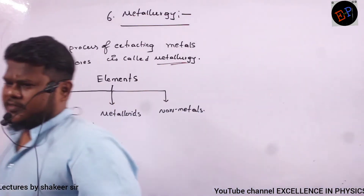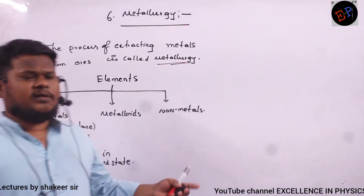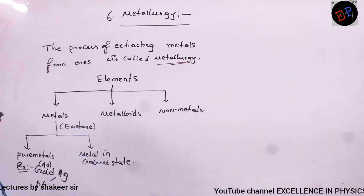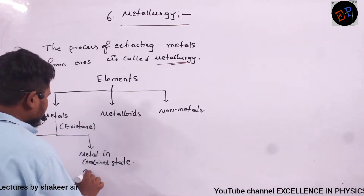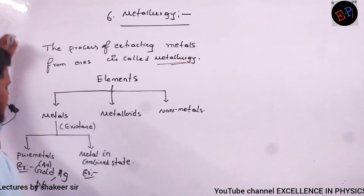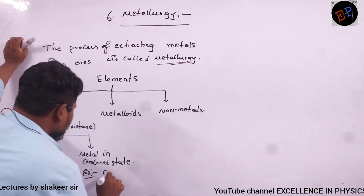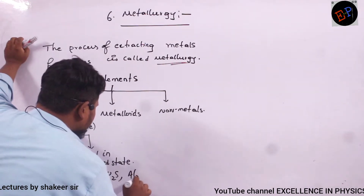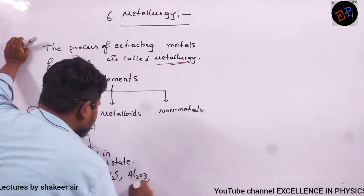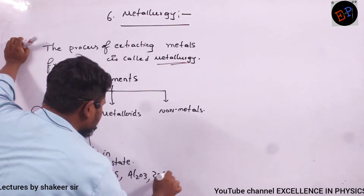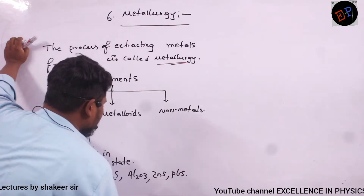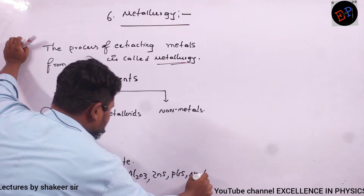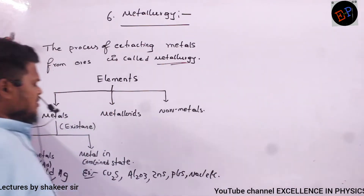Most metals we get only in combined state. Examples are Cu₂S, Al₂O₃, ZnS, PbS, and NaCl.